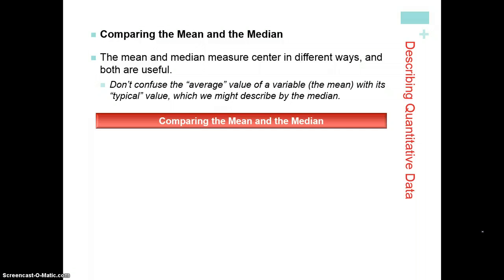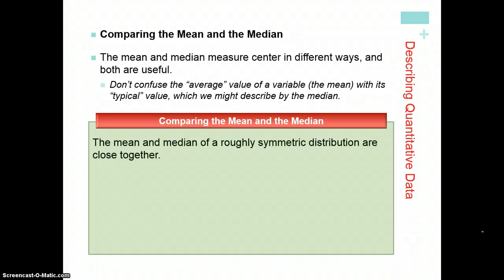Talking about comparing the mean and the median. They measure center in different ways, and that ties into just how they're both calculated. We saw in that previous example that the mean was drawn upward to 31.25, and the median was 22.5, and that indicates a skewed to the right distribution.